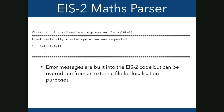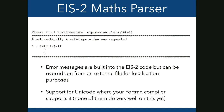Those error messages are built into EIS-2 — no extra files are needed. You can provide an external file for localization purposes, and if your Fortran compiler supports Unicode strings, you can have Unicode error messages. Fortran compilers aren't brilliantly supported for Unicode yet, but that's probably coming in the near future.